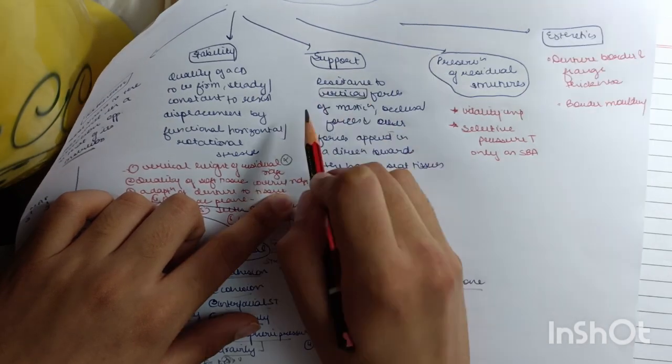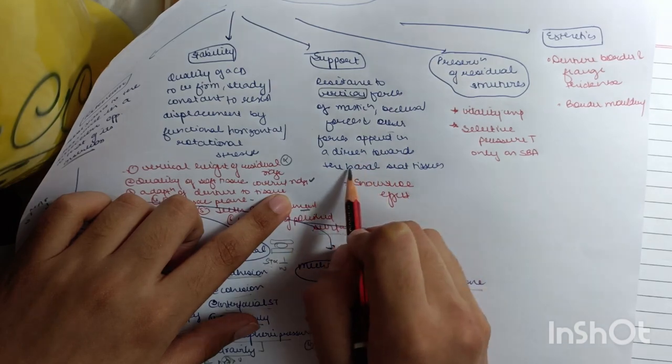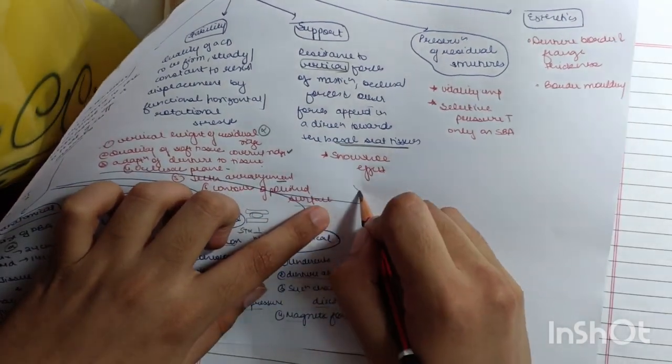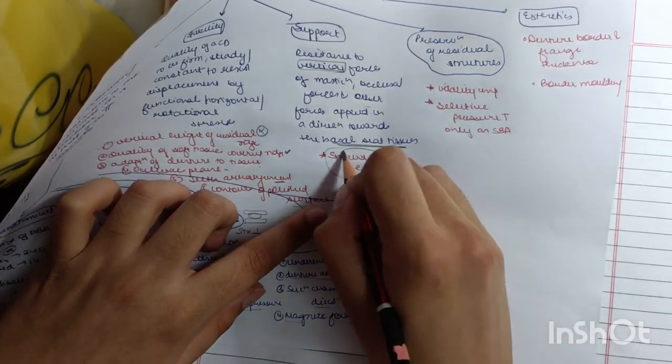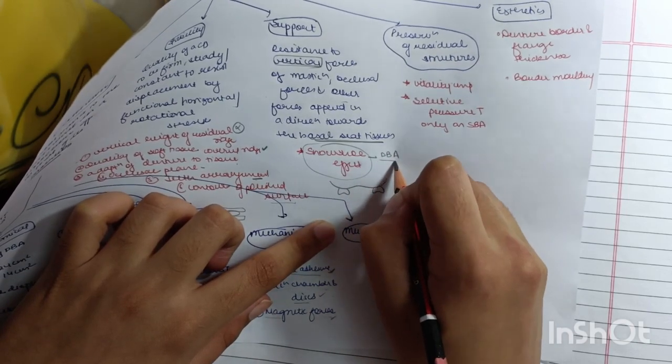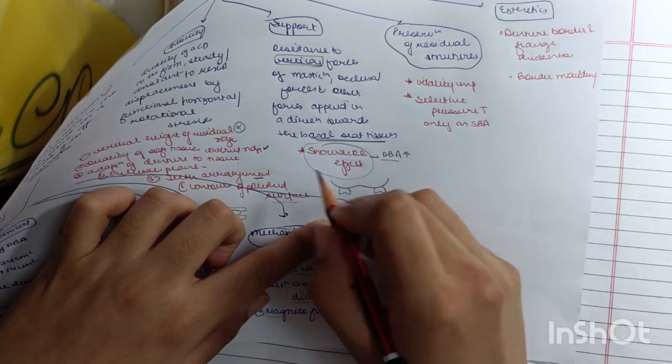Support: it is the resistance to the vertical forces of mastication, occlusal forces, and other forces applied in a direction towards the basal tissue. What is snowshoe effect? We basically have the idea that we have to have a high denture bearing area so that a lot of force is transmitted along the area, then only support will be present.